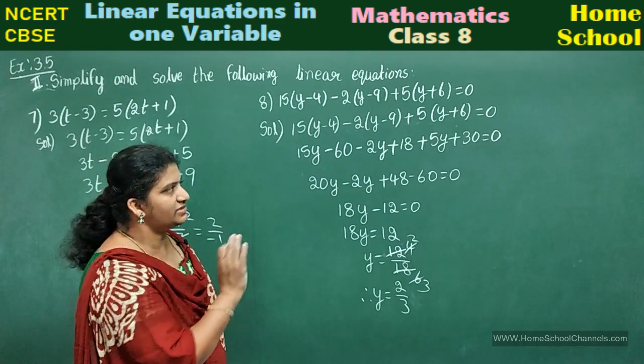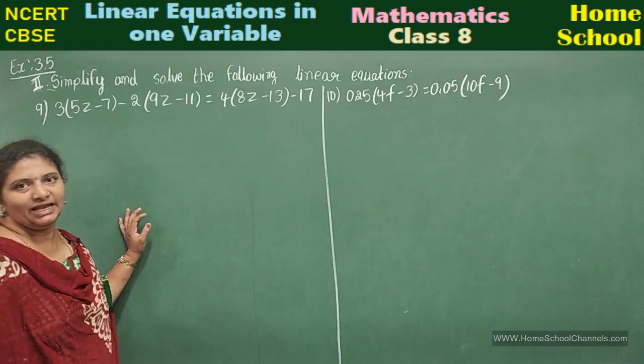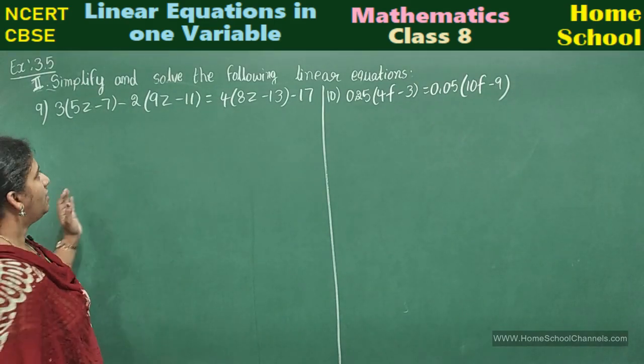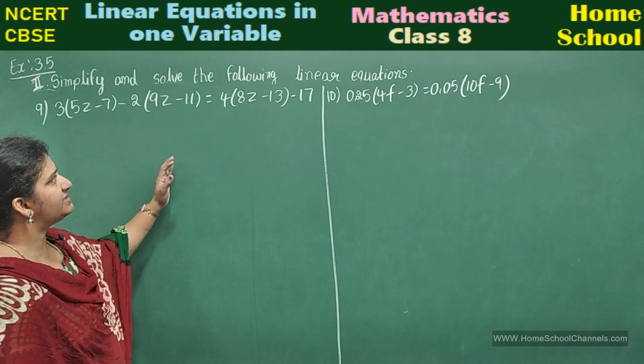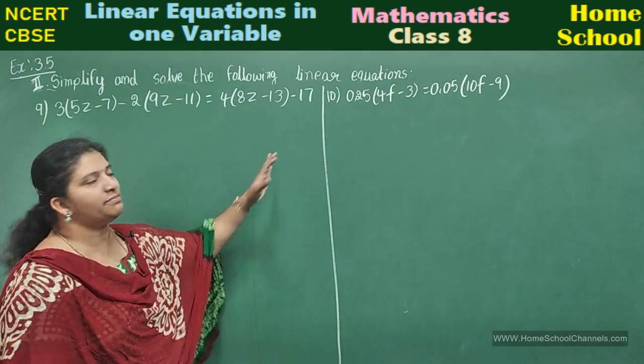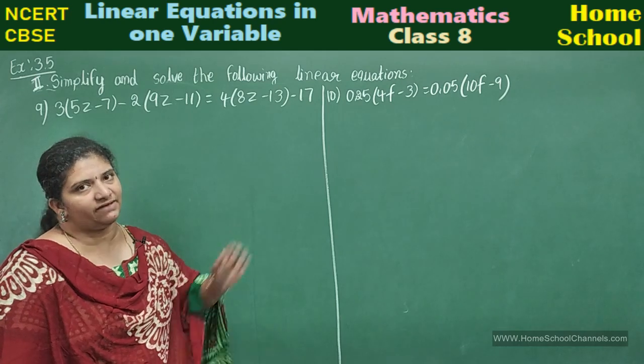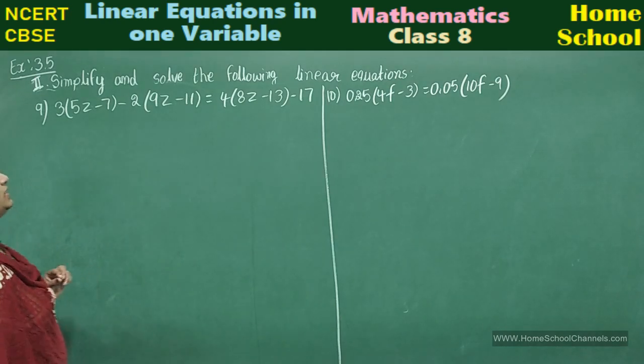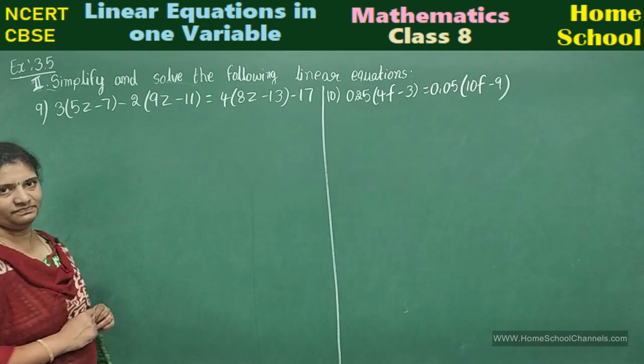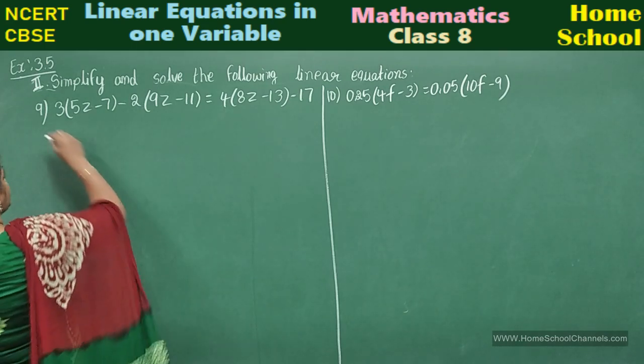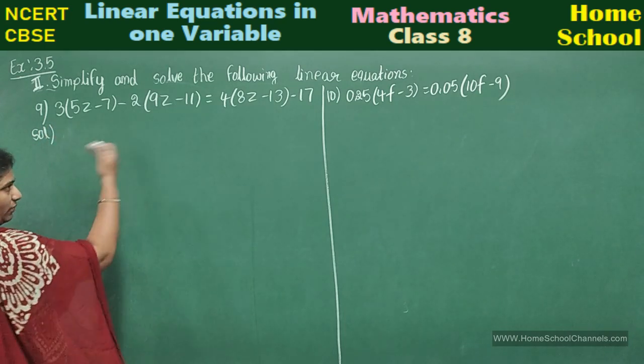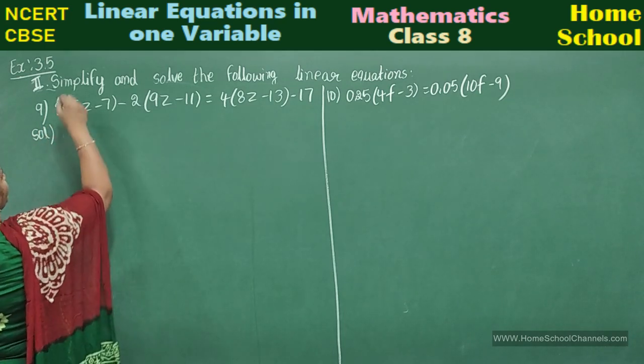Ninth problem: 3(5z - 7) - 2(9z - 11) = 4(8z - 13) - 17. See the variable which variable value you need to find here? z. Yes, so start the solution.